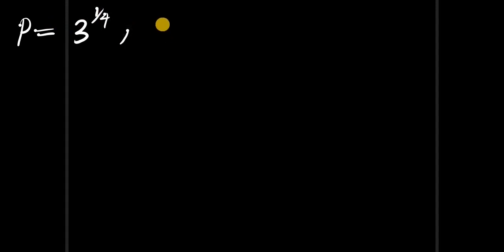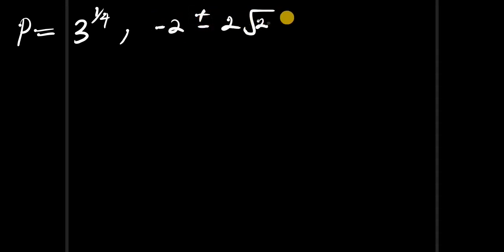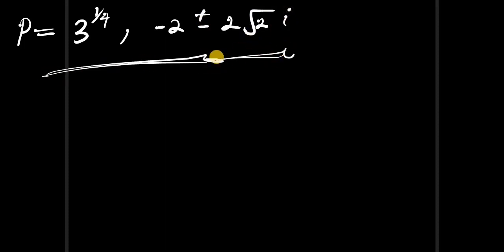So the possible values for p are: p equals 3 to the power of one-quarter, and p equals negative 2 plus or minus 2 root of 2 times i, all to the power of one-quarter. At this point we have come to the end of the lesson. Please don't forget to subscribe, like the video, share with your friends, and click the notification icon for updates. Thank you and goodbye.